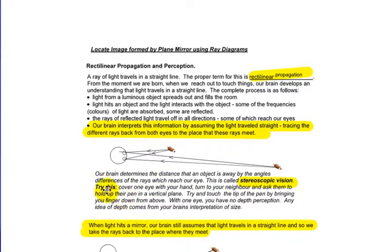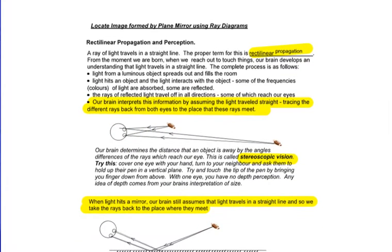Our brain determines the distance that an object is away by the angle differences of the rays which reach our eye. This is called stereoscopic vision. And there's another interesting thing here. Try this. Cover one eye with your hand. Turn to your neighbor and ask them to hold up their pen in a vertical plane. Try and touch the tip of the pen by bringing your finger down from above. With one eye, you'll have virtually no depth perception. So having two eyes, this triangulation helps us determine depth, how far the object is away.